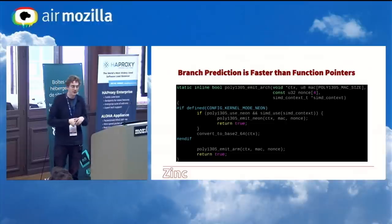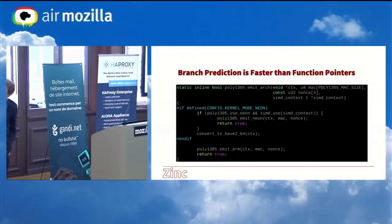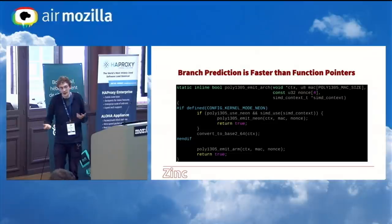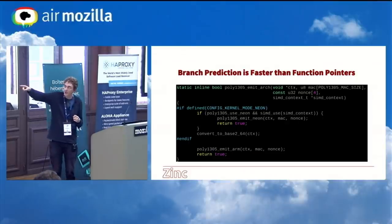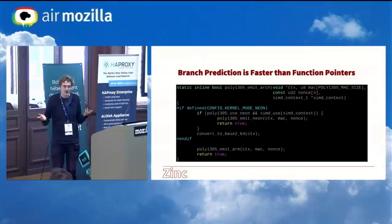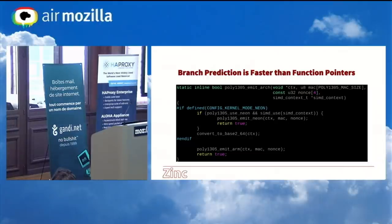We also found that on basically every platform, the branch predictor is faster than function pointers with this stuff. We have this poly1305_use_neon flag that's set when the module loads to see if the CPU supports NEON — not all CPUs will support it. As it turns out, branching on that becomes super fast because it's in a read-only-after-init section, it's never touched, it's always going to be the same thing, and the branch predictor does the perfect thing with it. So really the only thing it winds up branching on is whether NEON use is true, which changes for important reasons, and otherwise falls back to the integer one.